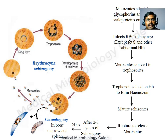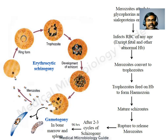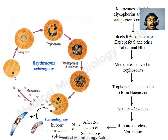After merozoites are released into circulation, they attach to glycophorins and sialoproteins on the RBC membrane, which act as receptors. Once bound, merozoites are internalized into a parasitophorous vacuole and converted into ring forms, trophozoites, and schizonts. The mature schizont ruptures to release more merozoites to infect additional RBCs. Importantly, P. falciparum can infect RBCs of all ages — a key virulence factor allowing high-level parasitemia.